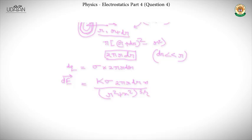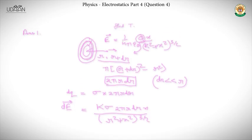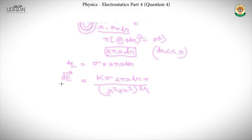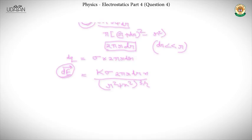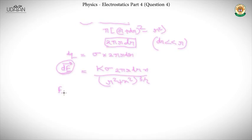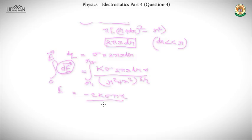Now we solve this using integration. All ring elements have E in the same direction only, so we can integrate all the small dE elements as scalars. Integrating from r1 to r2, E equals minus 2k·sigma·pi·x divided by (r² + x²)^(1/2), evaluated from r1 to r2.